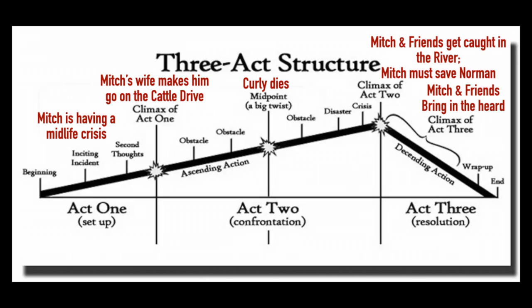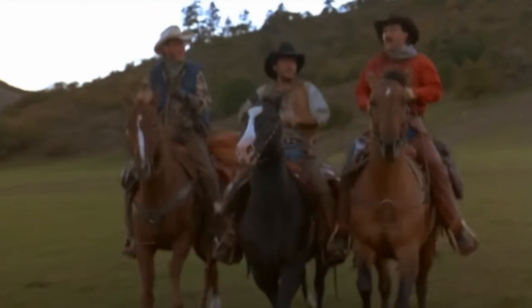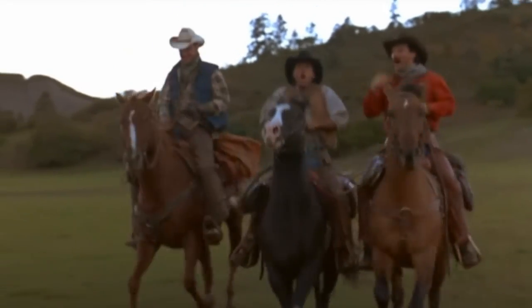Act three presents the climax of the entire story — Mitch and his friends driving the herd back to the cattle ranch against all odds and successfully achieving their goal. The wrap-up or denouement is Mitch going back home, at the airport, reunited with his wife, having found his smile. That's a very basic breakdown. So let's go ahead and throw in a little bit of an adjustment in act two called the multi-mountain structure.